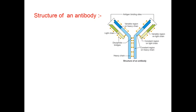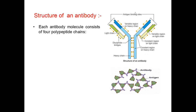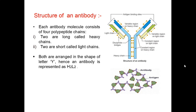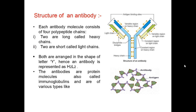Now let us discuss the structure of an antibody. Each antibody molecule consists of four polypeptide chains: two are long and called heavy chains, and two are short and called light chains. Both are arranged in the shape of the letter Y. Hence, an antibody is represented as H2L2. The antibodies are protein molecules, also called immunoglobulins, and are of various types like IgA, IgM, IgE, and IgG.